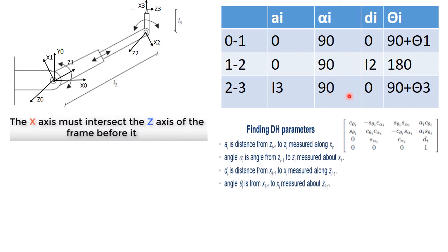For the D parameters: D1 is the change from X0 to X1 along Z0 — there is no change, so D1 equals 0. There is a change for X1 to X2 along Z1, which is L2, and this is a variable (the prismatic joint). For X2 to X3 along Z2, there is no change, so D3 equals 0 as well.